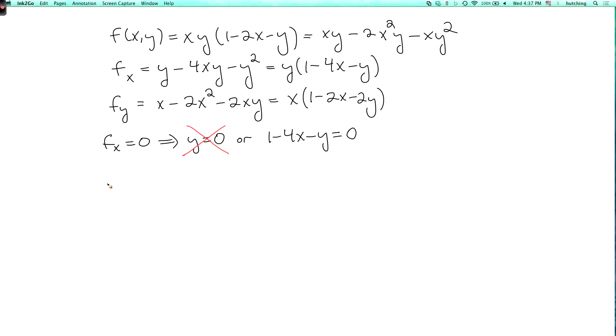Then when we set fy equal to 0, we get that x equals 0 or 1 minus 2x minus 2y equals 0. So by the same argument, x equals 0 is not going to give us the maximum. So we know that we just have these two equations here.